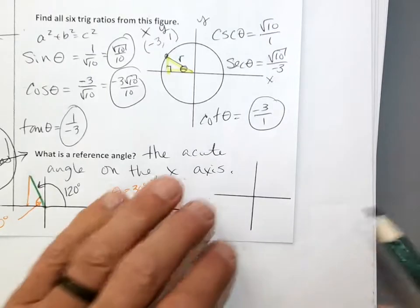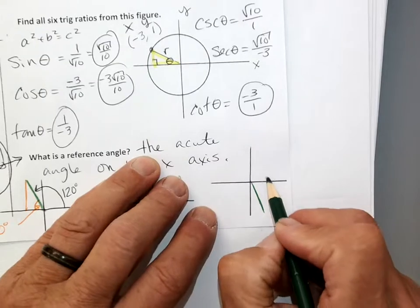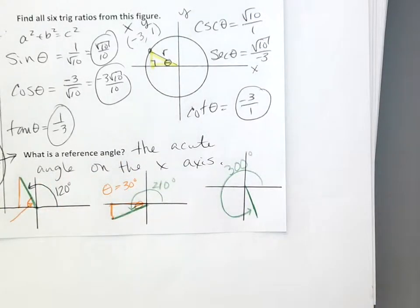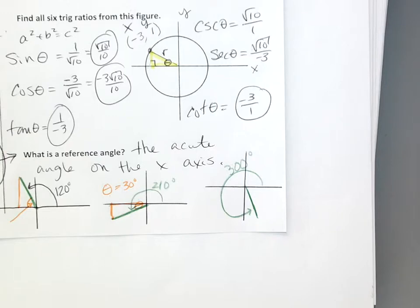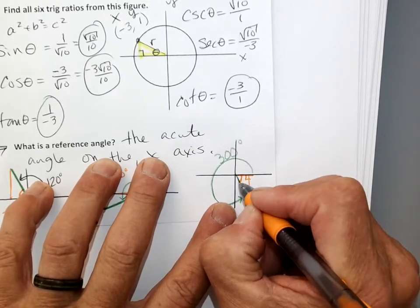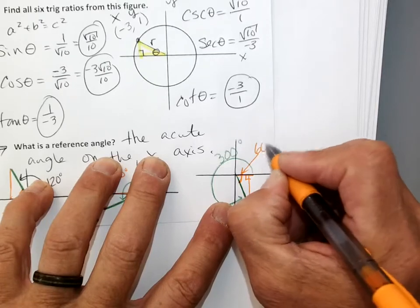Let me do one last example so you really get the idea. My angle is 300 degrees. Let me draw it incorrectly first — that is not my reference angle because it's got to be on the x-axis. It's got to be this one instead. Here's my right triangle, flush with the x-axis. There's my reference angle — 60 degrees.